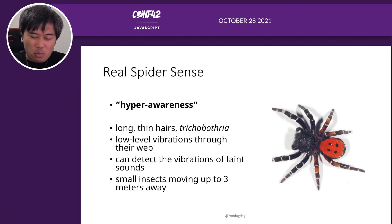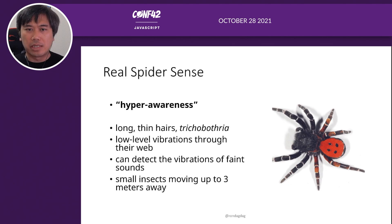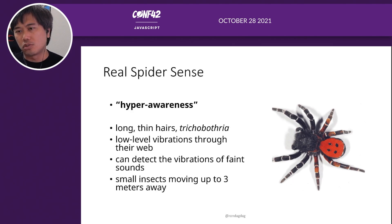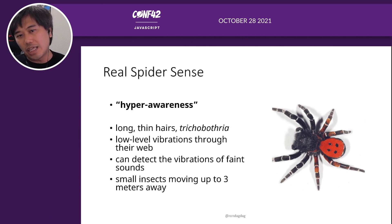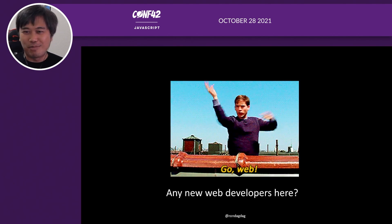The real amazing part is the real Spidey Sense that spiders have. It's called hyper-awareness — these long, thin hairs called trichobothria that allow them to detect low-level vibrations and even sound. They can detect insects up to three meters away because of that. Every time I see spiders with all these different hairs, it feels like the heebie-jeebies.